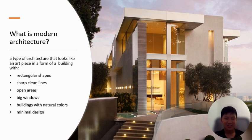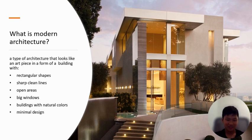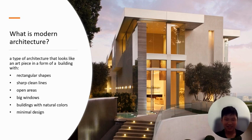Modern architecture is a type of architecture that looks like an art piece in the form of a building, with rectangular shapes, sharp clean lines, open areas, big windows, buildings with natural colors, and minimal design.